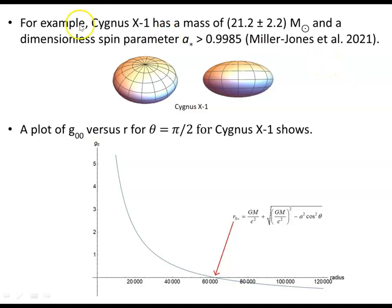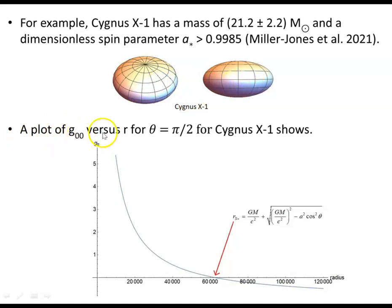For a specific example, let's take Cygnus X-1, which has a mass of 21.2 ± 2.2 solar masses and a dimensionless spin parameter A-star of approximately 0.9985, according to Miller-Jones and others in 2021. A plot of the time component of the metric versus coordinate radius R in the equatorial plane shows the outer stationary limit surface occurs at roughly 62,500 meters. Note this is coordinate radius, not actual physical radius.